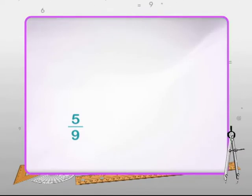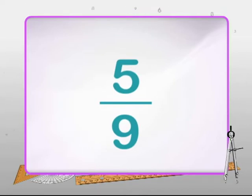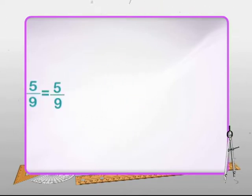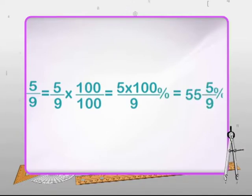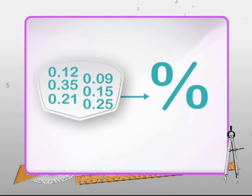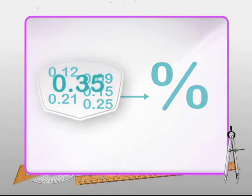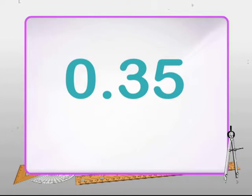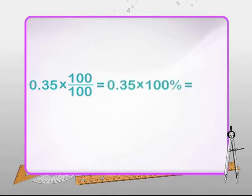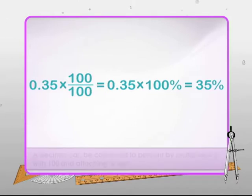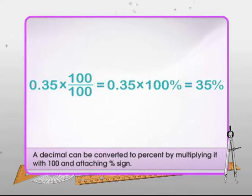However, there are many fractions whose denominators cannot be straightaway converted to 100 — for example, 5/9. The easiest way to convert such fractions to percentage is to multiply and divide by 100, so 5/9 is equivalent to 55.5/9 percent. We can even convert decimals to percentages. Consider the decimal 0.35 — multiplying and dividing by 100 gives 35%. The easiest way to convert a decimal to percent is to multiply it by 100 and attach the percent sign.